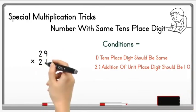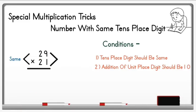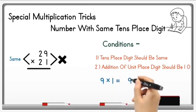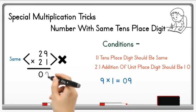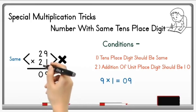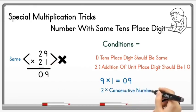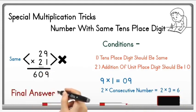Let's take the example 29 multiplied by 21. The tens digit of both numbers is 2 — the same — and the sum of the unit digits is 10, since 9 plus 1 equals 10. Multiply the unit digits: 9 × 1 = 9; write 09 in the answer. Then multiply the tens digit 2 by its consecutive number 3: 2 × 3 = 6. Write 6 before 09, giving the final answer 609.